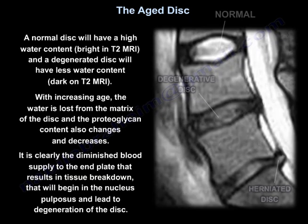A normal disc will have a high water content, which appears bright on T2 MRI, and a degenerated disc will have less water content, which is dark on T2. With increasing age, water is lost from the matrix of the disc, and proteoglycan content also changes and decreases. It is clearly the diminished blood supply to the end plate that results in tissue breakdown, beginning in the nucleus pulposus and leading to degeneration of the disc.